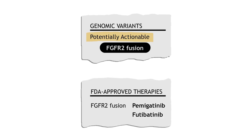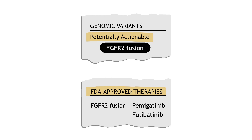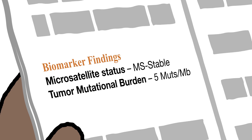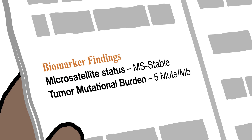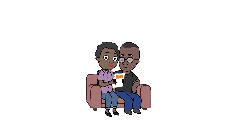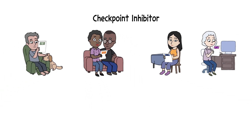Some reports use the umbrella term "biomarker" to refer to the features of a tumor that signal whether it might respond to an immunotherapy. You may benefit from an immunotherapy — for example, a checkpoint inhibitor — if your report shows you're positive for one or more specific types of biomarkers.